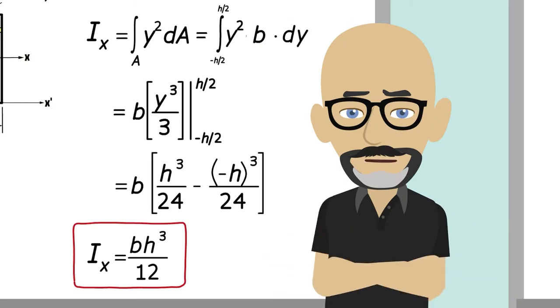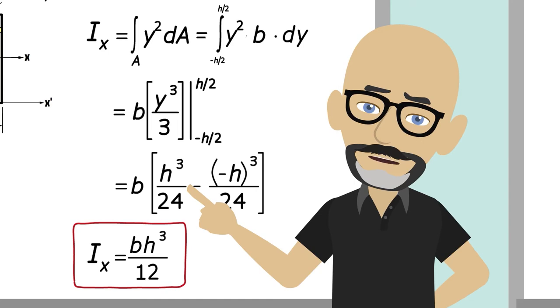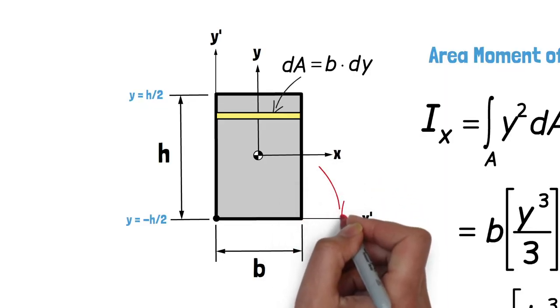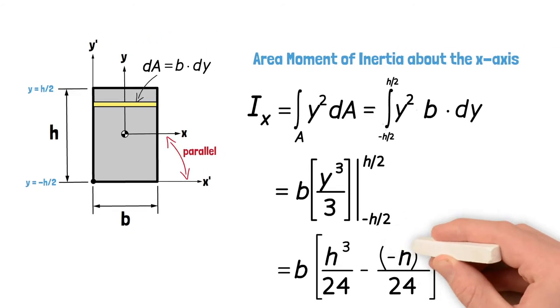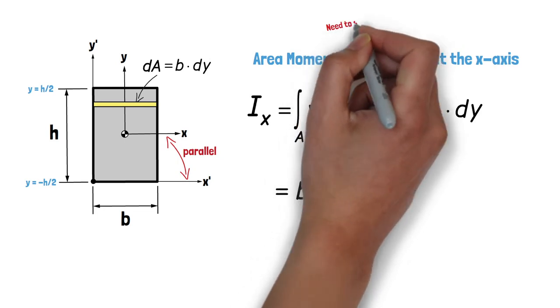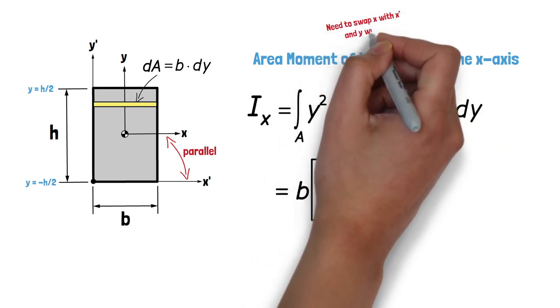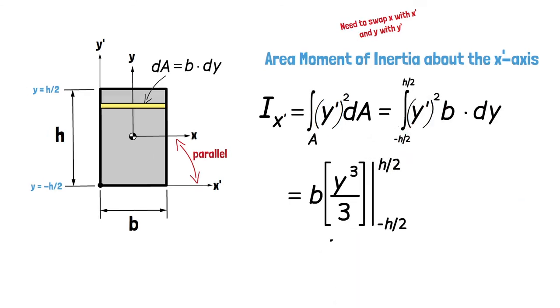Before we look at the area moment of inertia about the y-axis, let's first consider the area moment of inertia about the axis parallel to the x-axis, the x' axis. Since the x' axis is parallel to the x-axis, our formulation of the area moment of inertia is nearly the same as before, just with x' and y' as the coordinates rather than x and y. This results in the Ix' being equal to the integral of y' squared dA.